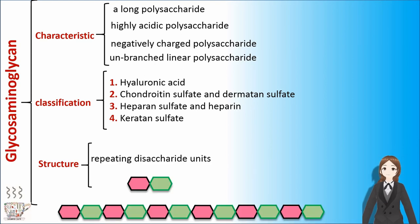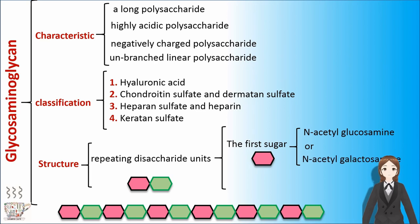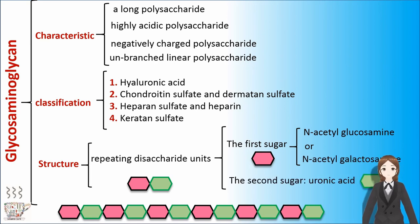Glycosaminoglycan has repeating disaccharide units in its structure. The first sugar is an N-acetylglucosamine or an N-acetylgalactosamine, and the second sugar is uronic acid.